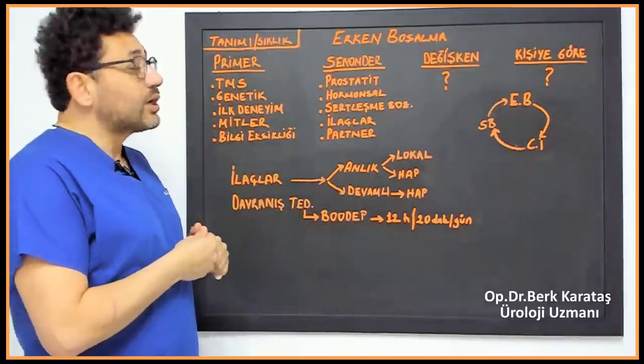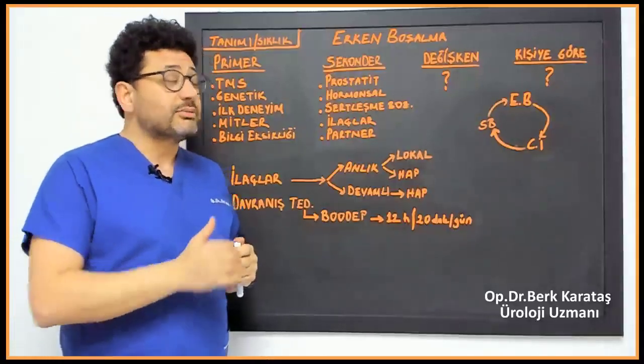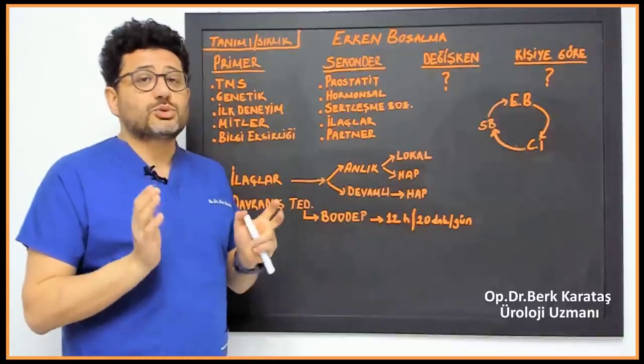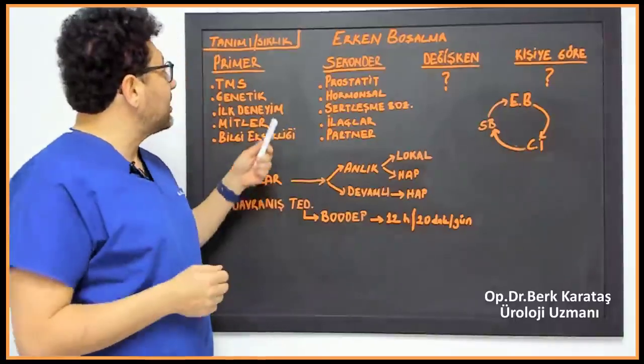Now we can divide premature ejaculation into four. It is very important to make a diagnosis here. Therefore, we draw a treatment program accordingly.